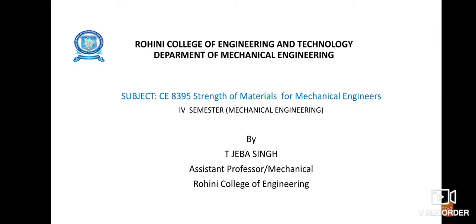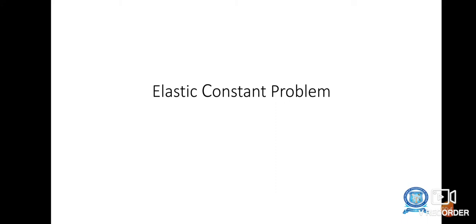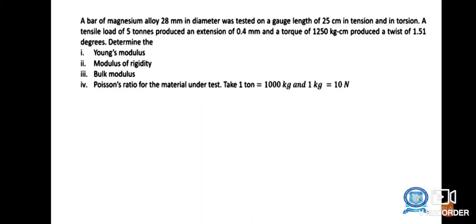We will study subject CE8395, Strength of Materials for Mechanical Engineers. Unit one covers stress, strain, and deformation of solids. The course outcome is that after successful completion, students should be able to apply various stress and strain relations in different materials due to tension and compression. Today we discuss elastic constants problems — there are three types: Young's modulus (E), bulk modulus (K), and shear modulus (G).